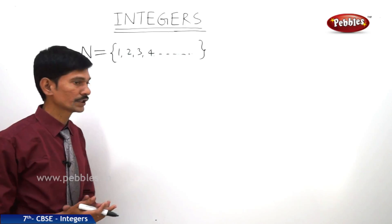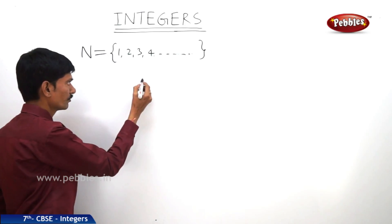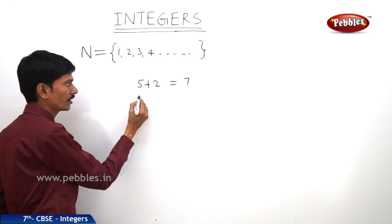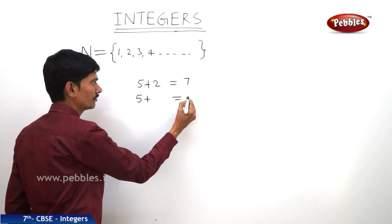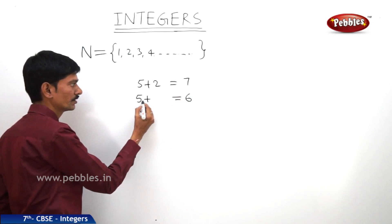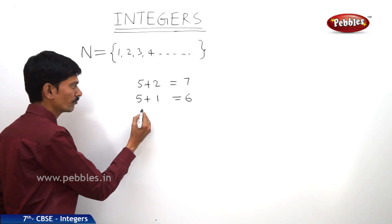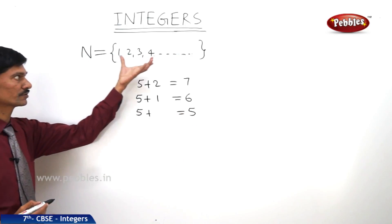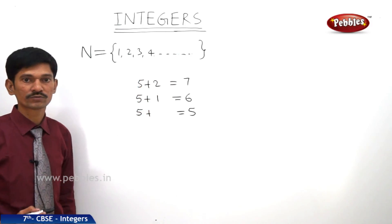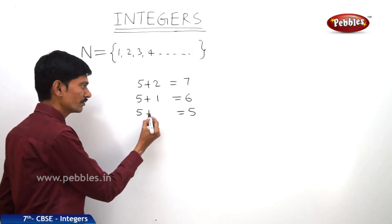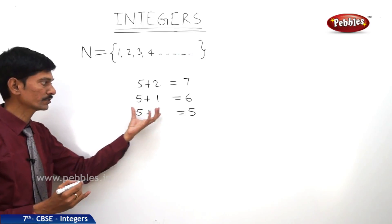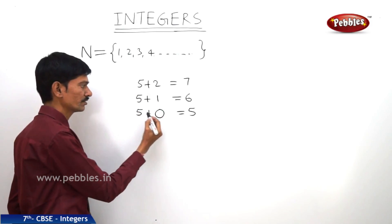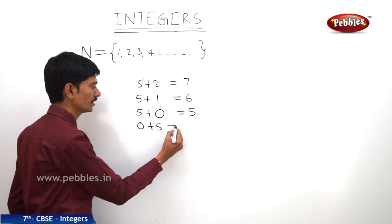Are these numbers sufficient in our day-to-day life? For example, what should be added to 5 to get 7? Obviously, 2. And what should be added to 5 to get the sum 6? We know that 1. And what should be added to 5 to get the sum 5 again? There is no number in the set of natural numbers — nothing should be added to 5 to get 5. That nothing is denoted by 0, so 5 plus 0 equals 5.